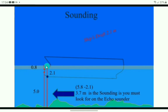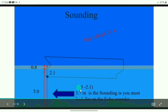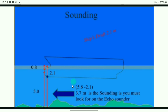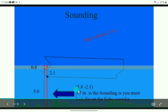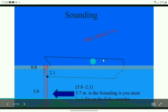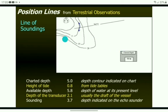The available depth of water becomes 5.8 meters by adding the 5-meter charted depth and 0.8 meters height of tide. Assuming the ship's draft is 2.1 meters — the height from the water level to the keel — then 5.8 minus 2.1 equals 3.7 meters under-keel clearance. So: charted depth plus height of tide gives total depth of water, then subtract the ship's draft to get the under-keel clearance, which matches the echo sounder reading. This gives you a position line indicating where your ship is.